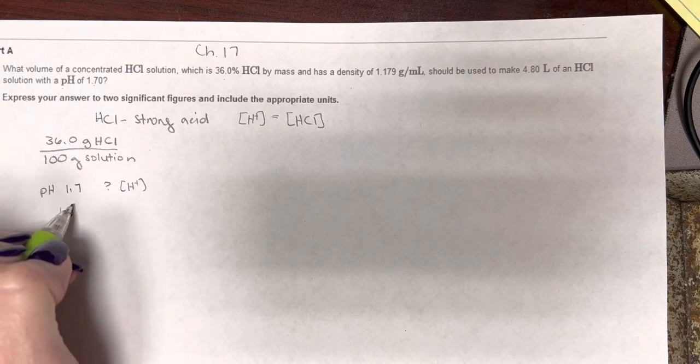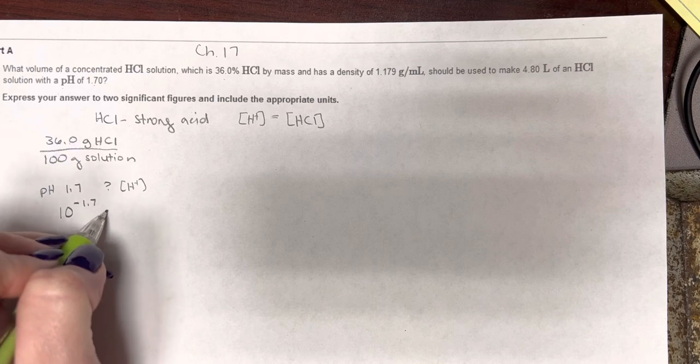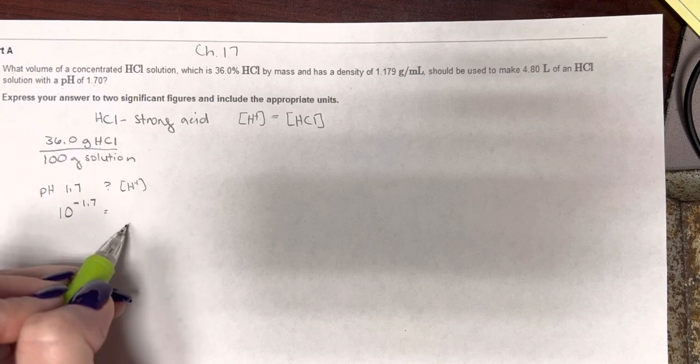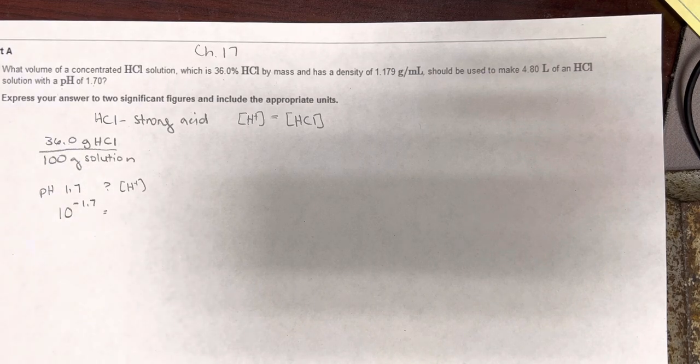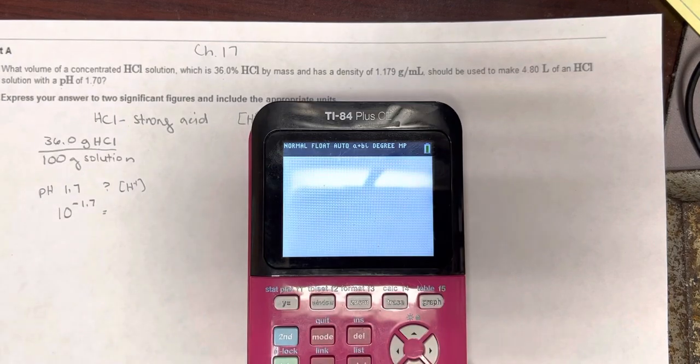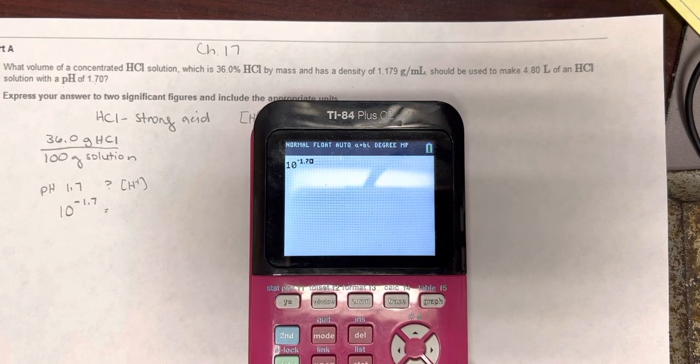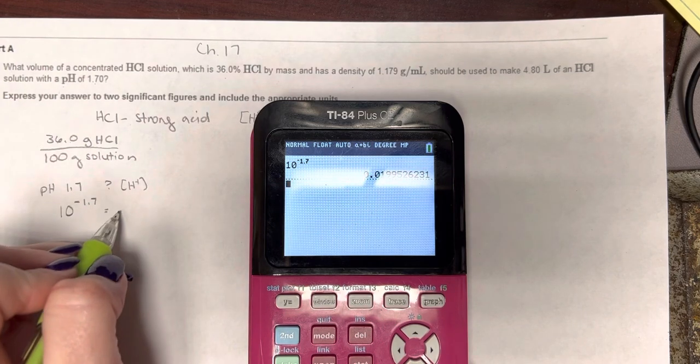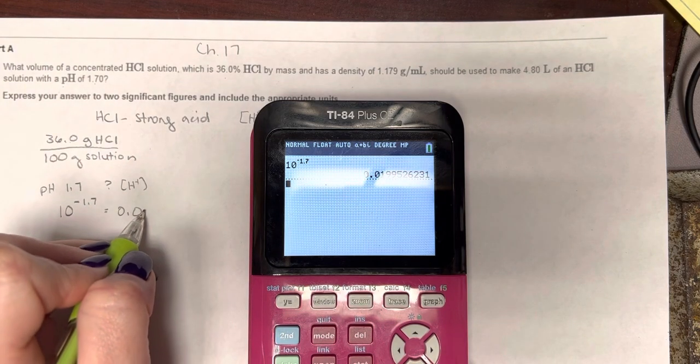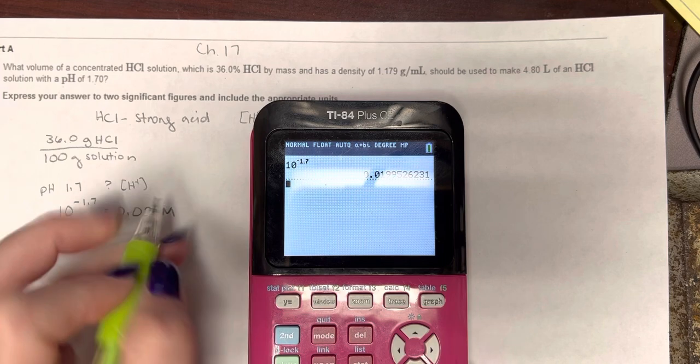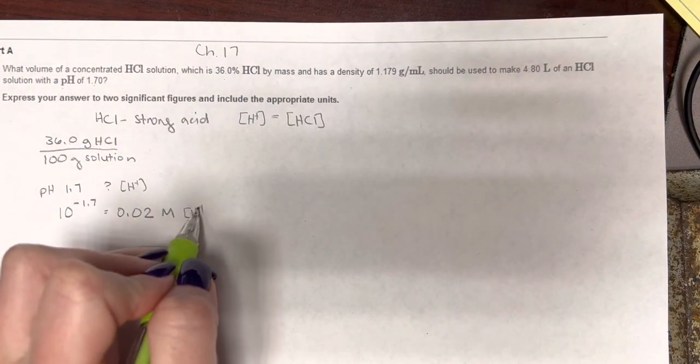Alright, we'll undo the p scale. 10 to the negative 1.7 power is going to be our concentration of H plus, so let's do that. Let's do 10 to the negative 1.7. So I get 0.02, and that's going to be molar H plus.